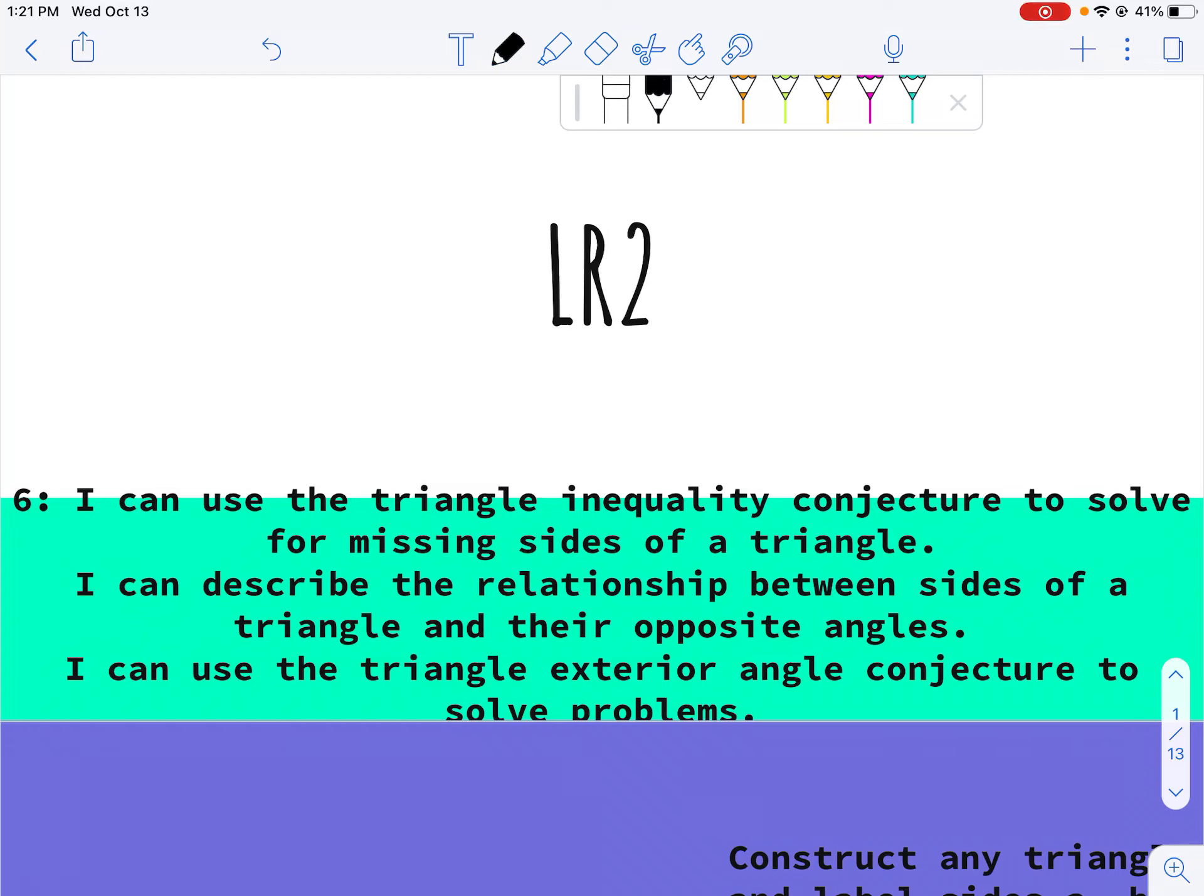On LR2-6, we're going to learn the triangle inequality conjecture, and we'll solve for missing sides, and we'll also describe the relationship between sides of a triangle and the opposite angles.